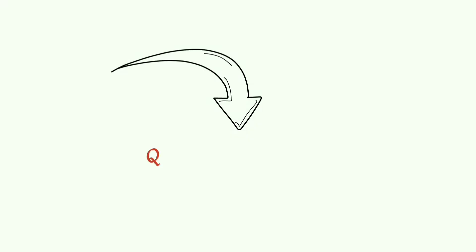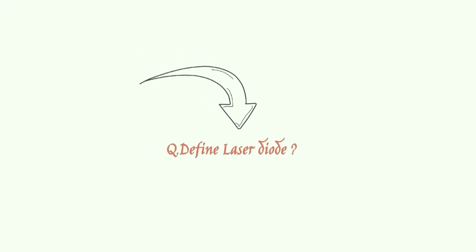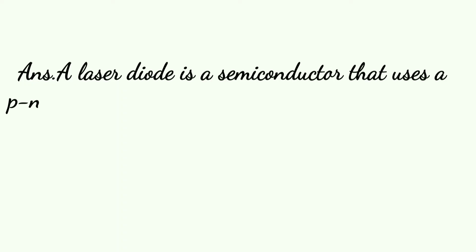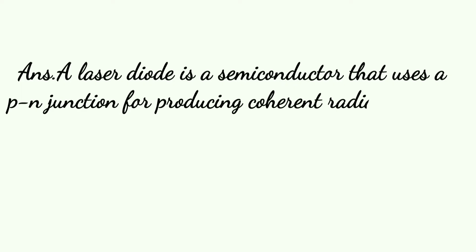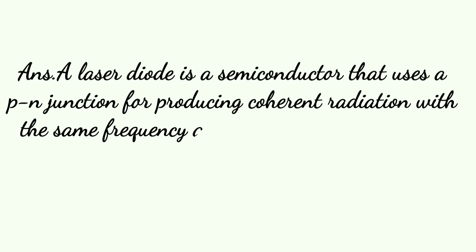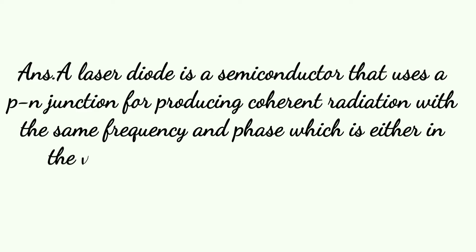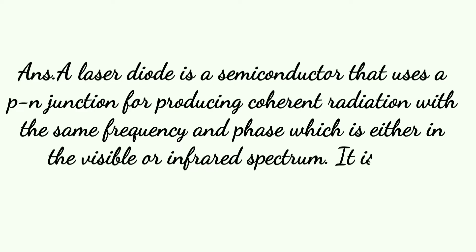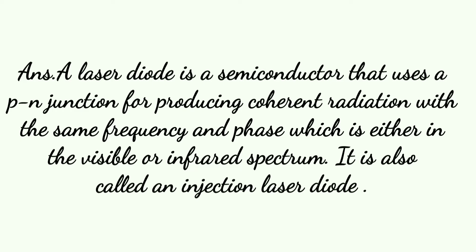A laser diode is a semiconductor that uses injection for producing coherent radiation with the same frequency and phase, which is either in the visible or infrared spectrum. It is also called an injection laser diode.